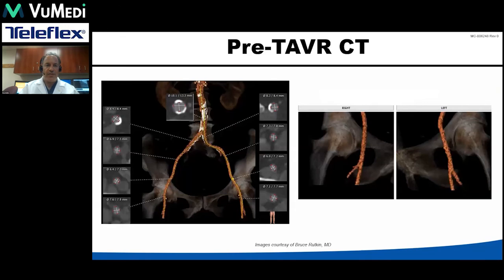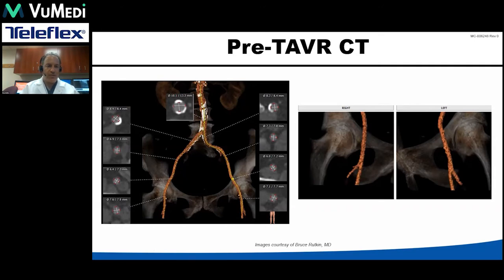Assessment of the pre-TAVI CT is critically important. In this case we're looking at a really favorable patient — examining three things: sizing, calcium, and tortuosity. This is favorable because we can see in the stick zone, depending on which side we're using, either is acceptable. We've got nice straight vessels, no calcification on the anterior wall, particularly if we're considering perclose, and the vessel sizing is six to seven millimeters or greater. We also pay attention to the level of the bifurcation of the common femoral into the SFA and the profunda — we want a healthy margin above the bifurcation, but also well below the pelvic brim, so we're not potentially up near the retroperitoneal space. As you can see here, we've got a favorable access for this case.